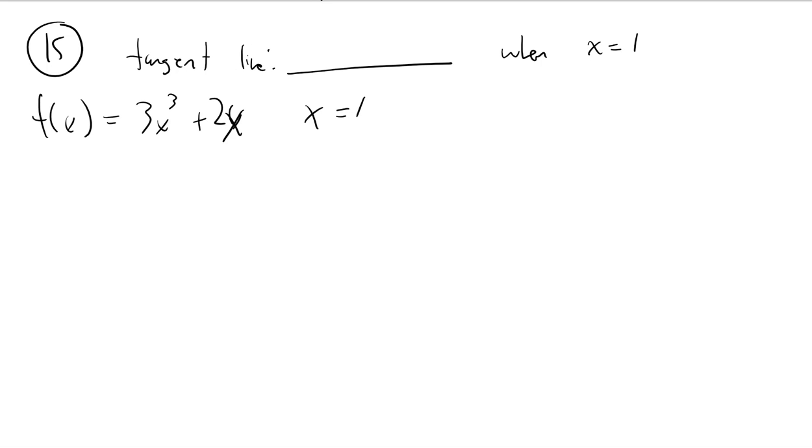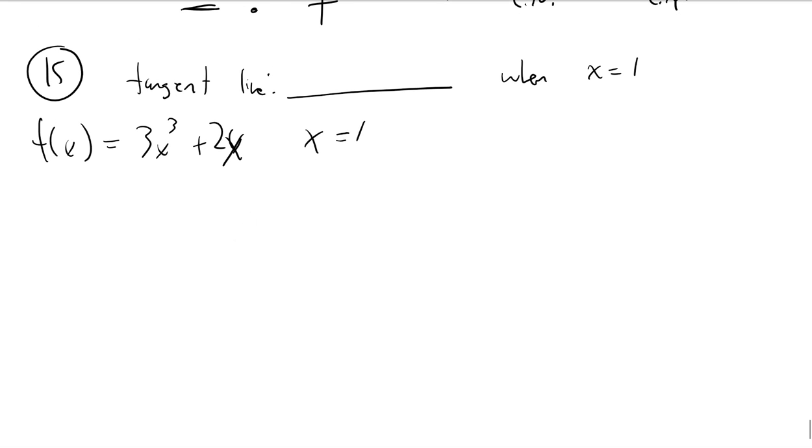Alright, so this guy wants us to come up with the equation of a tangent line, so definitely need to know the easiest way to write the equation of a line, which is point-slope. The only time I would ever bother with slope-intercept is if that's how it was written in multiple choice, but point-slope is 99% of the time what you want in calculus.